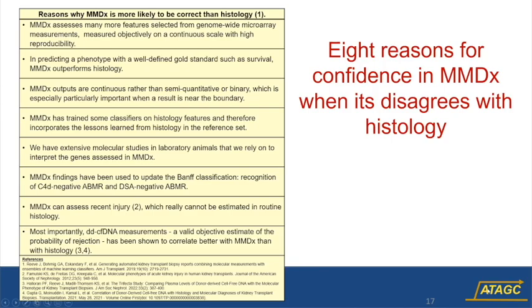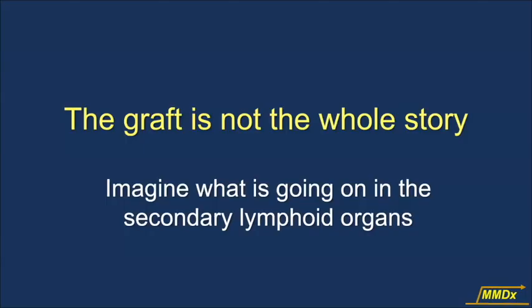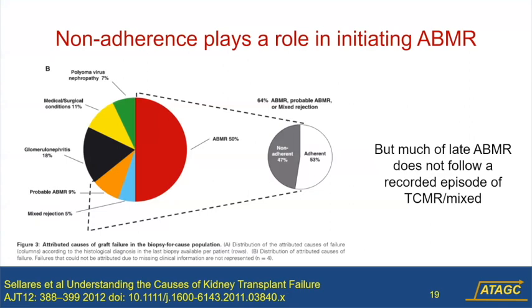MMDX can assess recent parenchymal injury — the tissue is often histologically normal and is severely injured. Cell-free DNA measurements correlate better with MMDX than with histology, giving us confidence in the platform's performance. A human is undergoing adaptive immune responses that are changing constantly, in relationship to immunosuppression burden, and a lot is going on underneath the tip of the iceberg that you see as a rejection episode. Non-adherence also plays a role.